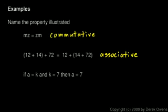And then the third one here, if a equals k and k equals 7, then a equals 7. That's an example of the transitive property.